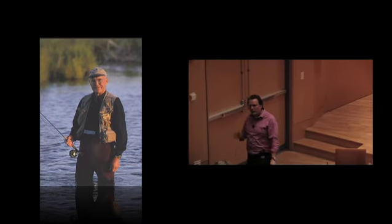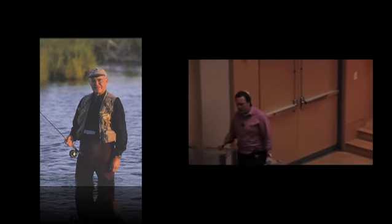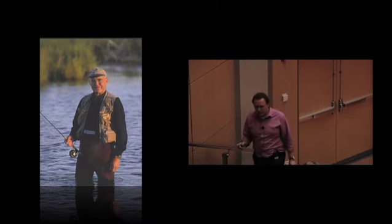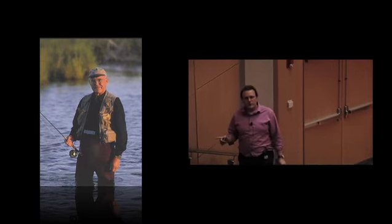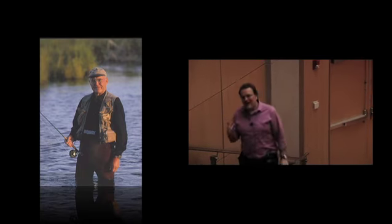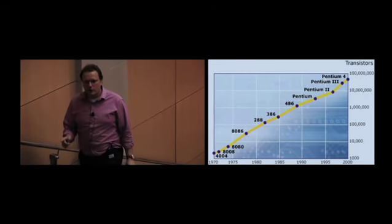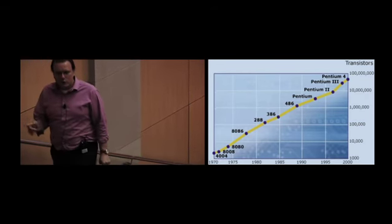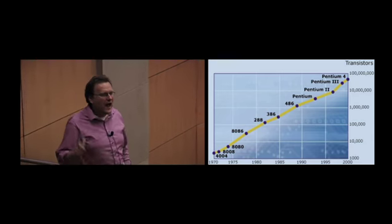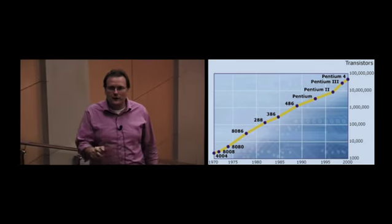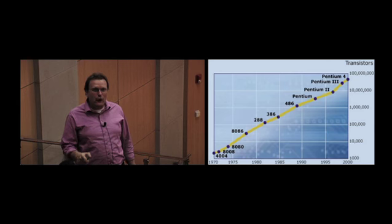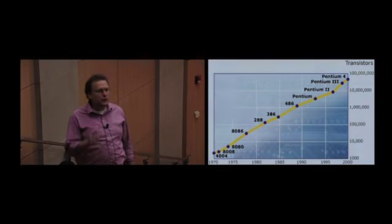But what that means in practice is that every 24 months, a computer chip for the same cost is half the size and twice as fast. Now that's something that's useful. So every two years, the basic circuitry of a computer is half the size and twice as fast. That has some nice advantages. That's why an iPhone doesn't look like a Buick in your pocket.